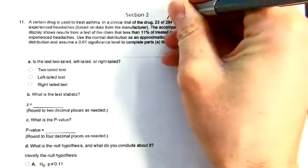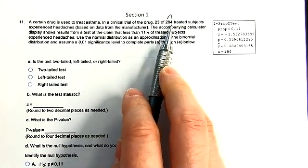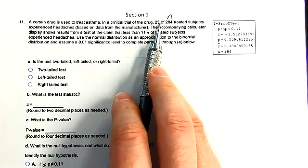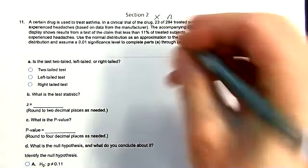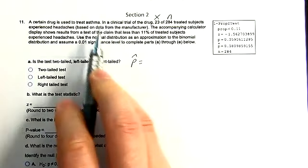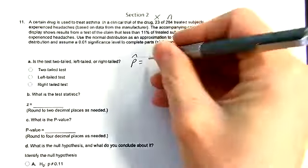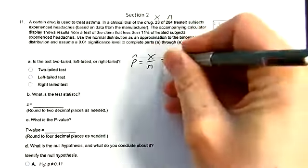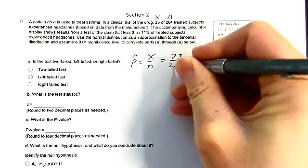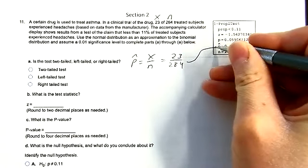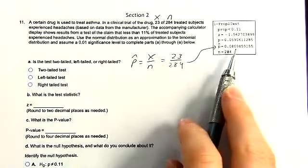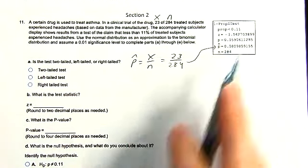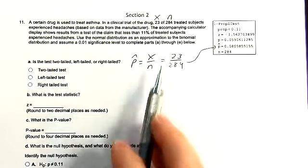First off, they identified that N, the number of people in this study, was 284. And X is 23. We could calculate the proportion of people who got headaches from this drug by taking X and dividing it by N — 23 divided by 284. The proportion of people who got a headache was about 8%.